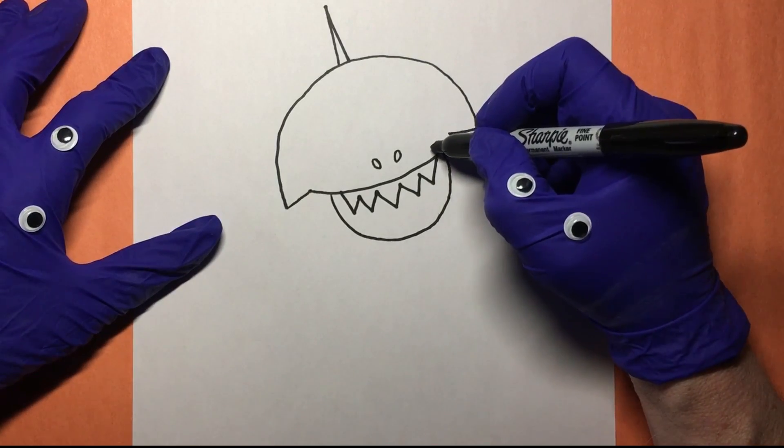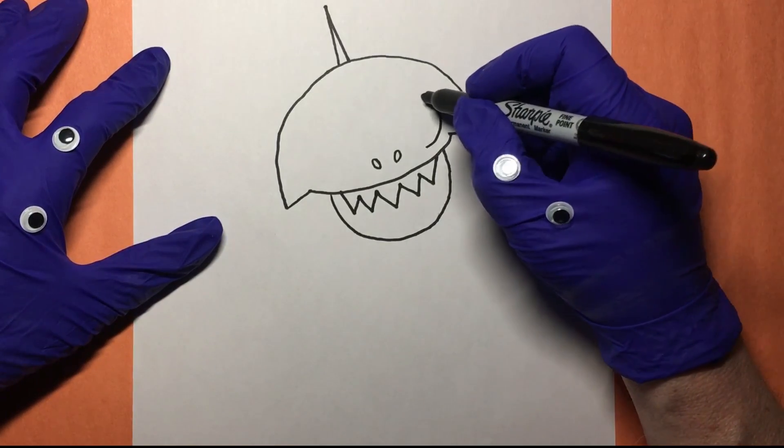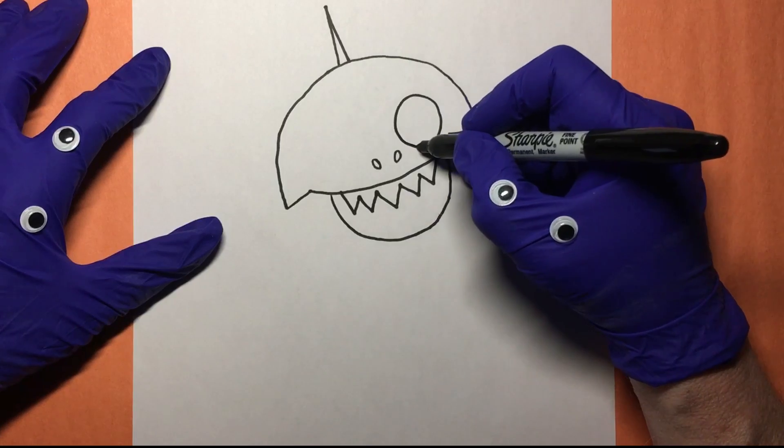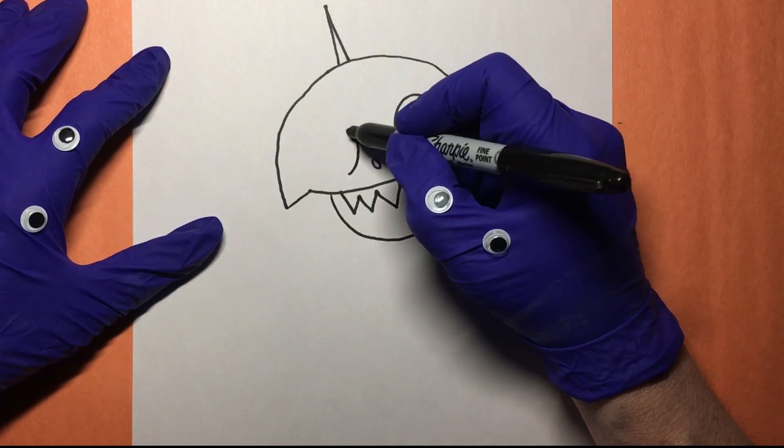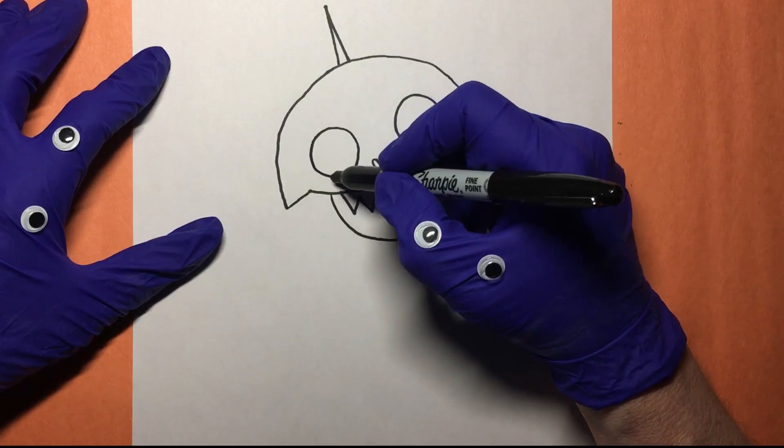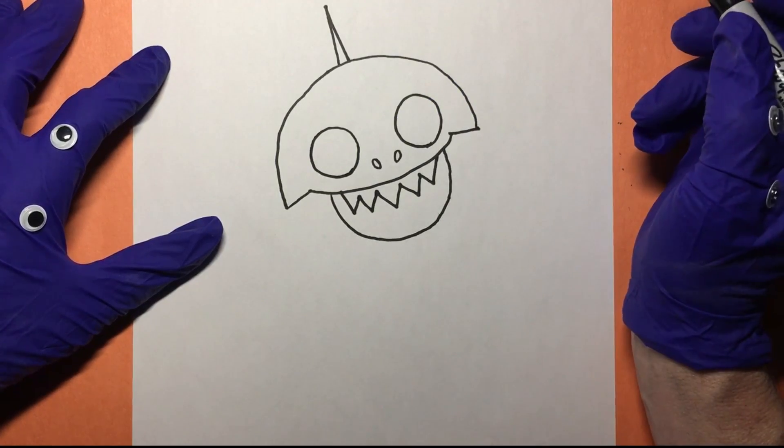And now Baby Shark's eyes. Big old eyes here. That's nice. One eye there. And then we'll do another circle over here for his eye over here. Oh, it's looking good.